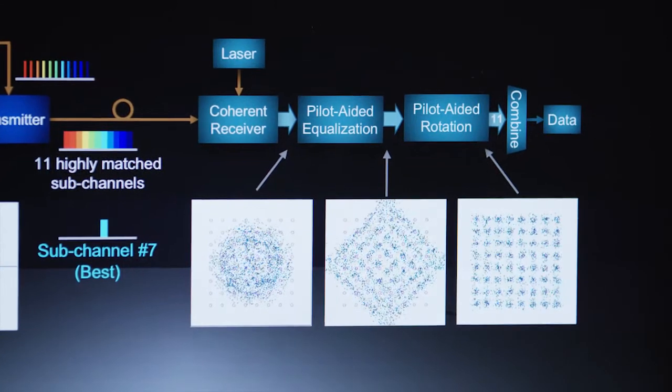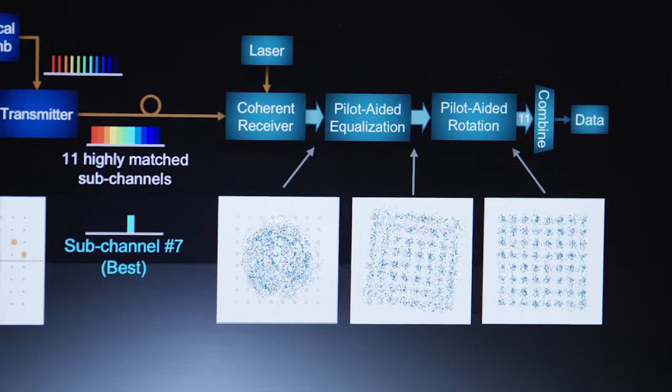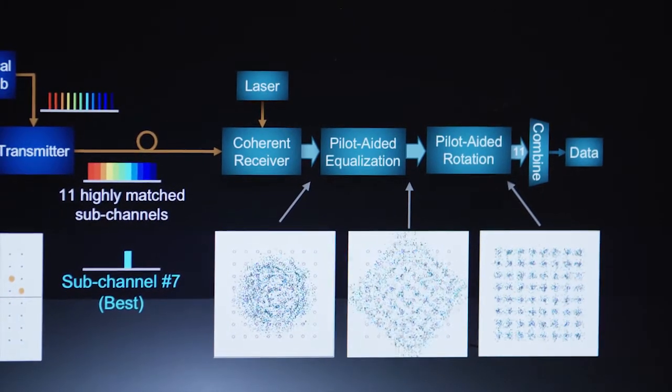And this means that we can then go and decide what was the likelihood of any particular bit being a 1 or a 0. And then once we have that done, then we send it to a soft decision decoder, which basically rather than taking a 1 or a 0, it takes a likelihood of a transmitted bit being a 1 or a 0.